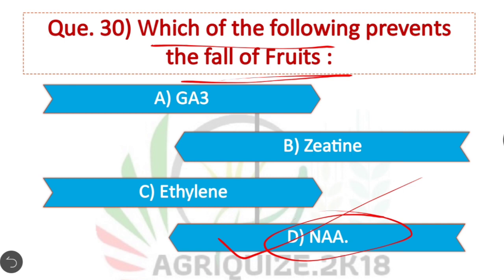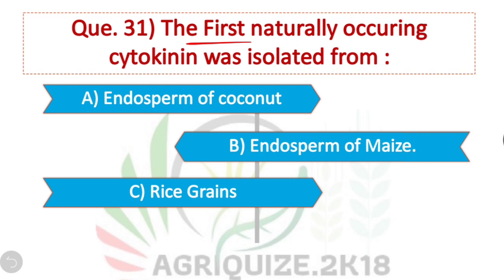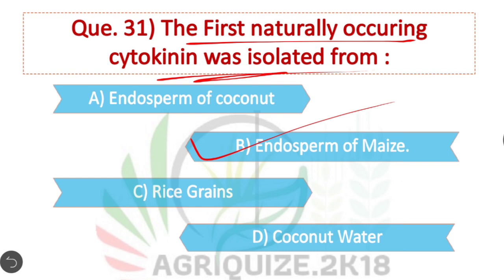Question 31: The first naturally occurring cytokinin was isolated from — Option B is correct: the endosperm of maize.